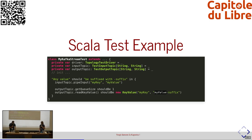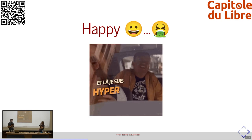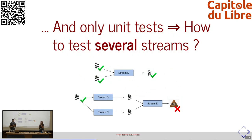On a déjà un outil qui permet de faire les tests sur le Kafka Stream. Mais je ne suis pas tout à fait d'accord. Cet outil n'est pas parfait. Déjà, on travaille sur une infrastructure moquée, pas sur la vraie infrastructure avec le vrai cluster Kafka, ce qui ne permettra pas de faire des tests d'intégration. De plus, ça permet de tester unitairement un stream, mais comment fait-on si on veut tester plusieurs streams à la fois ? Quand on met notre stream dans une pipeline de données, on ne pense peut-être pas au cas où la donnée aura telles caractéristiques.